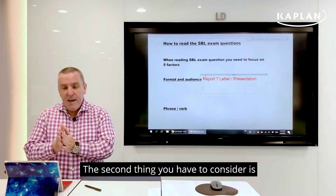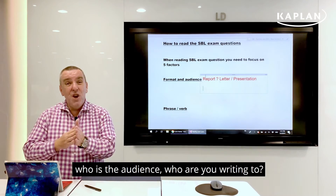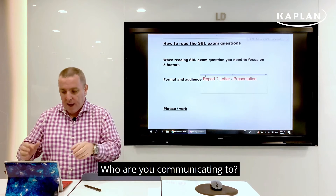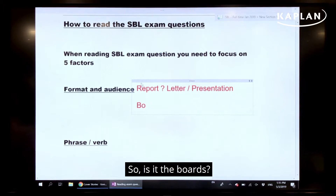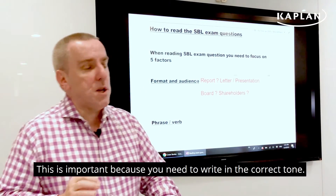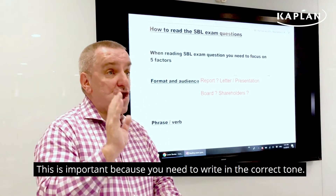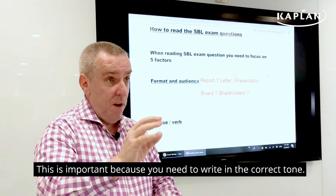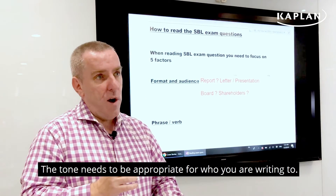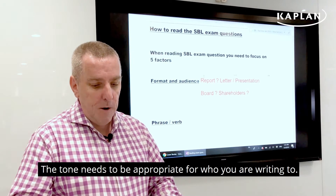The second thing you're going to consider is who is the audience — who are you writing to, who are you communicating to? Is it the board? Is it the shareholders? This is important because you need to write in the correct tone. The tone needs to be appropriate for who you are writing to.